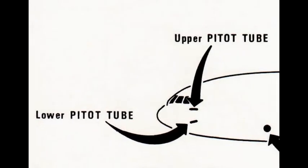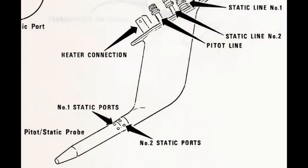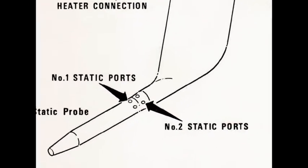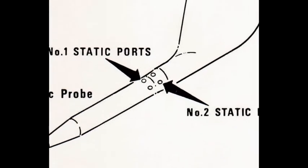The pitot probes are normally mounted on the front of the aircraft. Some pitot probes have the static ports built into them. They are mounted such that the aircraft body has minimal effect on the probe's accuracy.